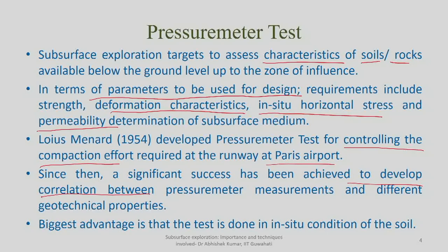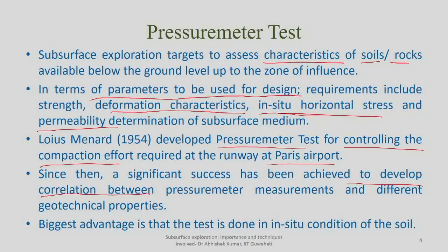Correlations are very important because you cannot always obtain soil samples or directly measure in-situ parameters such as deformation characteristics, in-situ strength, horizontal stress, and permeability. Correlations have been developed based on soil type, investigation method, over-consolidation ratio, relative density, and can even be region- or country-specific. Since 1954, researchers have realized that different soil parameters can be easily correlated from typical pressuremeter field measurements.